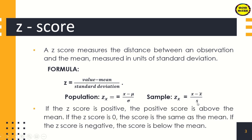If the z-score is positive, the score is above the mean. If the z-score is zero, the score is the same as the mean. If the z-score is negative, the score is below the mean.